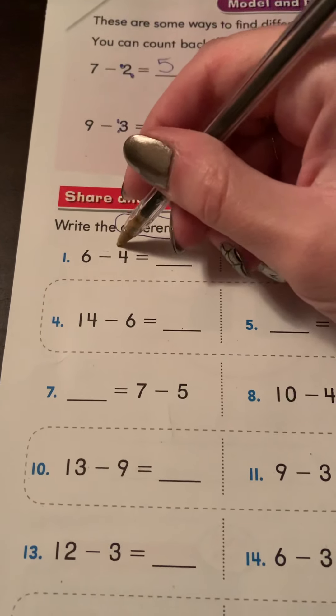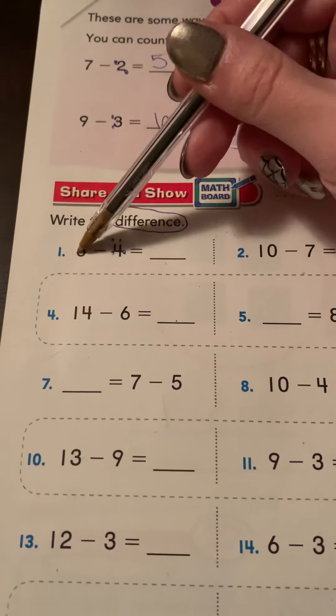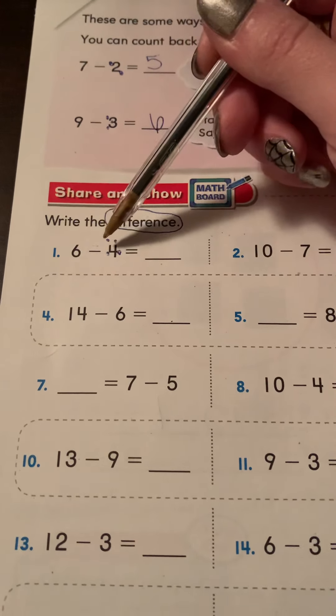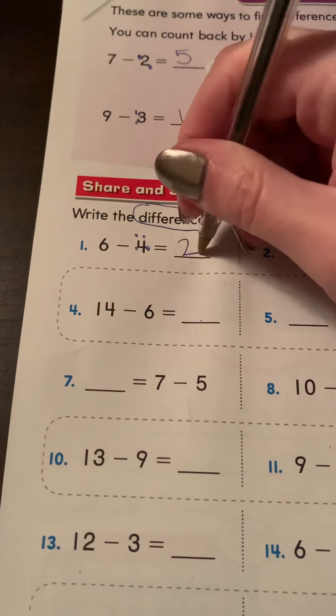Well, if we put one, two, three, four touch points on the four, start with a bigger number and count backwards. Six in your head, one, five, four, three, two. Six minus four is two.